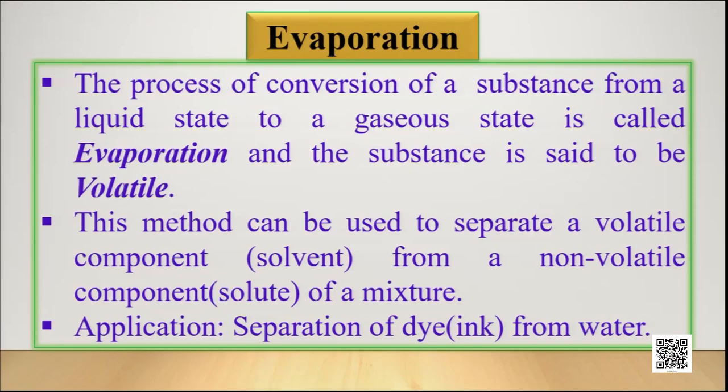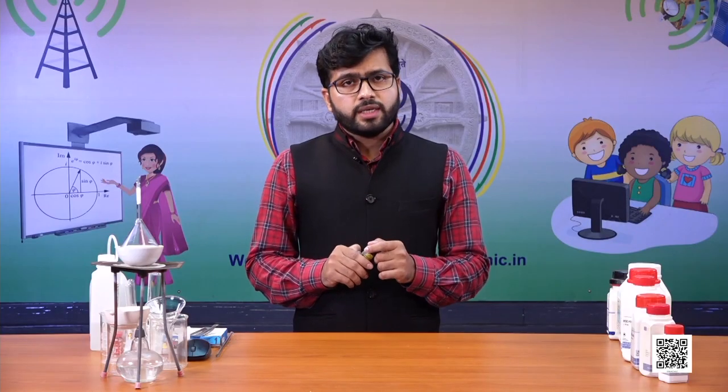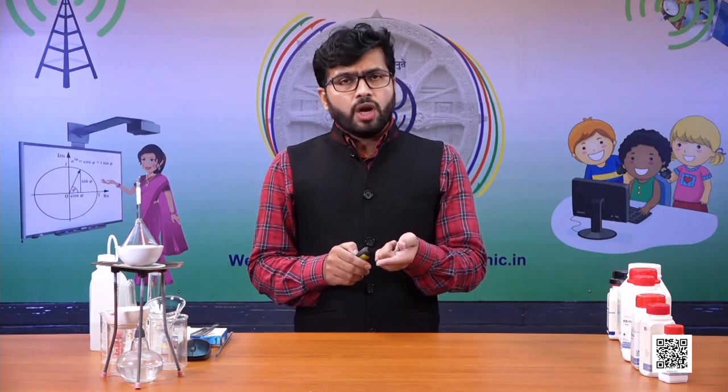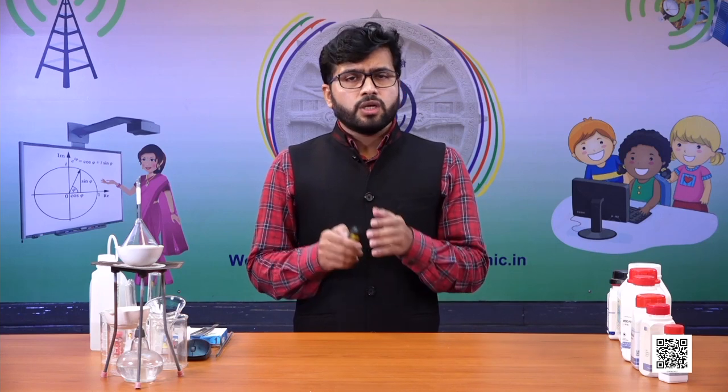The process of conversion of a substance from a liquid state to gaseous state is called evaporation, and the substance is said to be volatile. That means a mixture containing one component that is volatile — which upon heating will get converted into gaseous state — can be separated by the process of evaporation. If one component can be evaporated out, we can separate the other component from it.